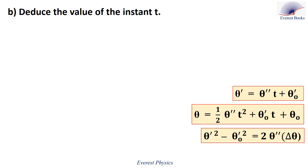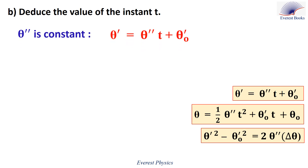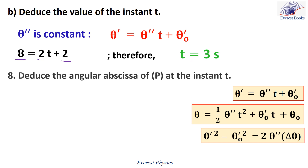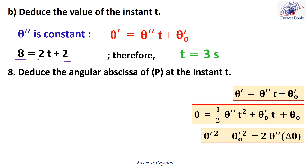Part 7b: find the value of the instant t. We know θ' = 8 rad/s, θ'' = 2 rad/s², and θ'₀ = 2 rad/s. Using the first equation and replacing θ' by 8, θ'' by 2, and θ'₀ by 2, we get t = 3 seconds.